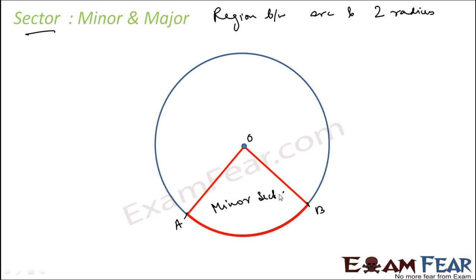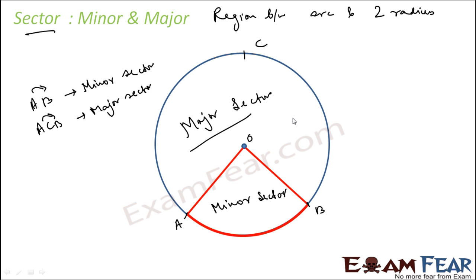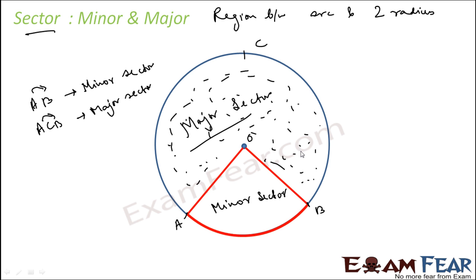Similar to minor and major arcs, we have a minor sector and a major sector. The minor arc AB corresponds to the minor sector, and the major arc ACB corresponds to the major sector. The shaded region from the minor arc is the minor sector; the larger region including the major arc is the major sector.